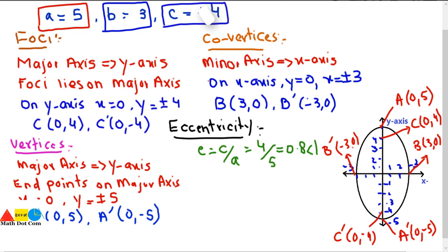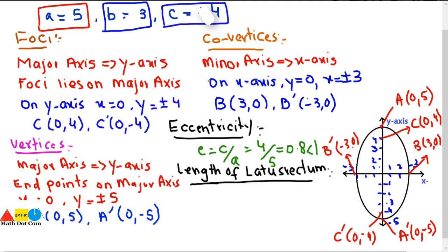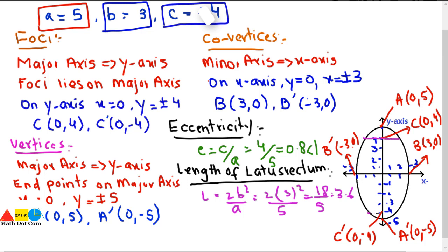The length of the latus rectum is given by 2b²/a. Substituting: 2 × 3²/5 = 18/5 = 3.6. Since there are two foci, there are two latera recta, each of length 3.6, one passing through each focus.